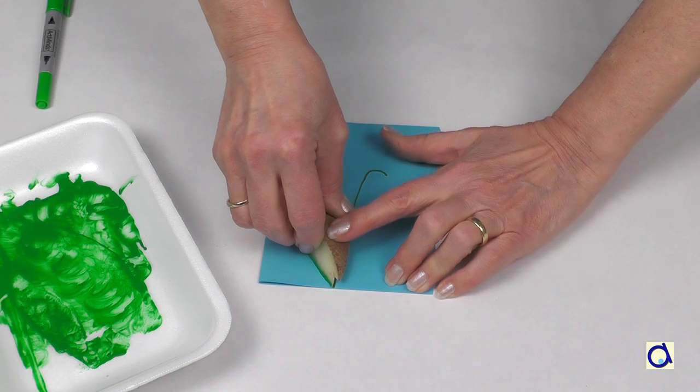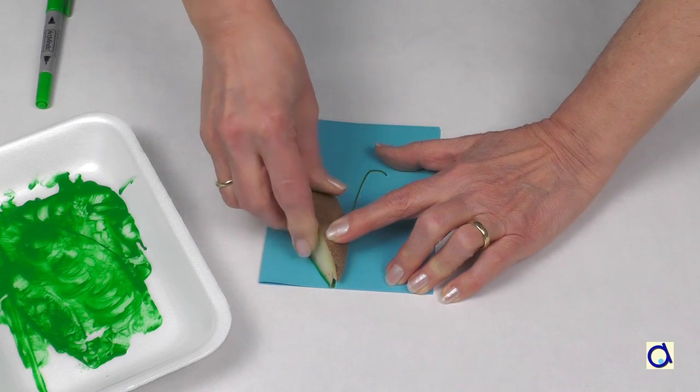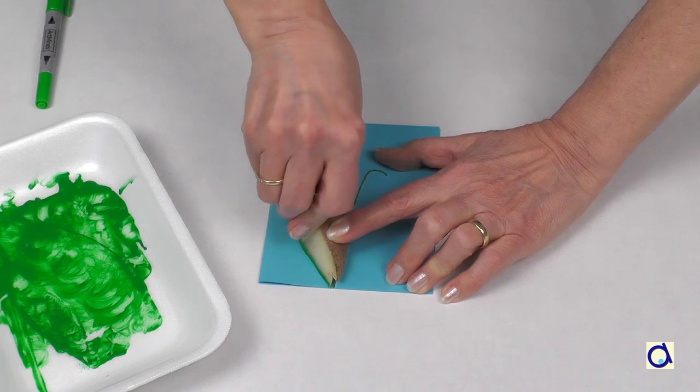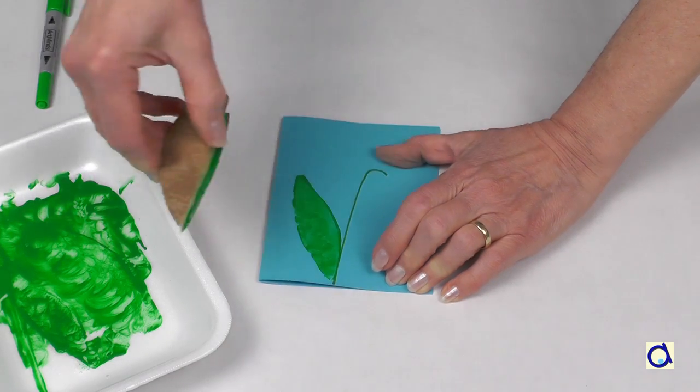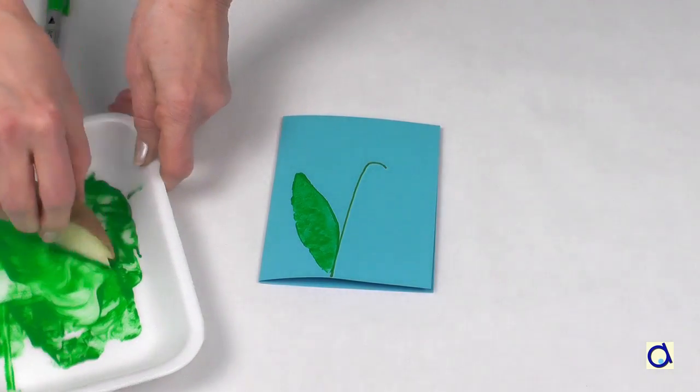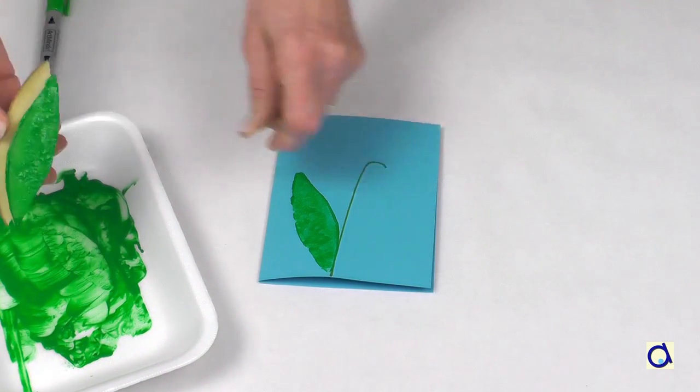Put green paint in a recycled styrofoam tray for example and dip the stamp with a lily leaf in the paint. Then press the stamp on the card on both sides of the stem.